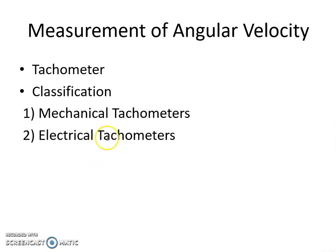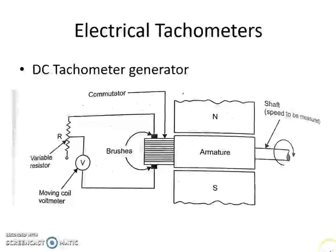Among these electrical tachometers, some have already been discussed in previous modules. Here, we will mainly focus on DC tachometer generator and AC tachometer generator. For the measurement of angular velocity or angular speed, electrical tachometers are preferred over mechanical tachometers because the angular velocity is converted into an electrical signal or parameter, which may give an accurate value of angular velocity.